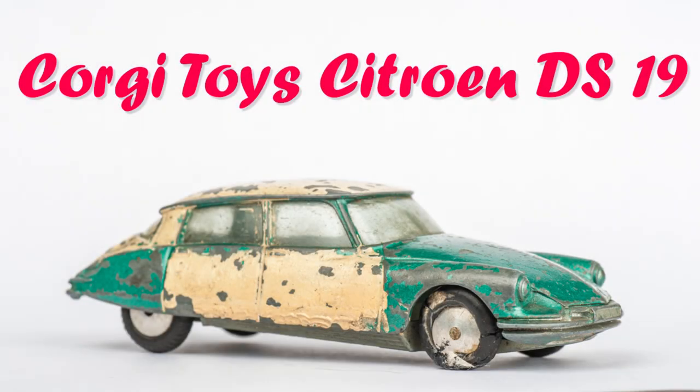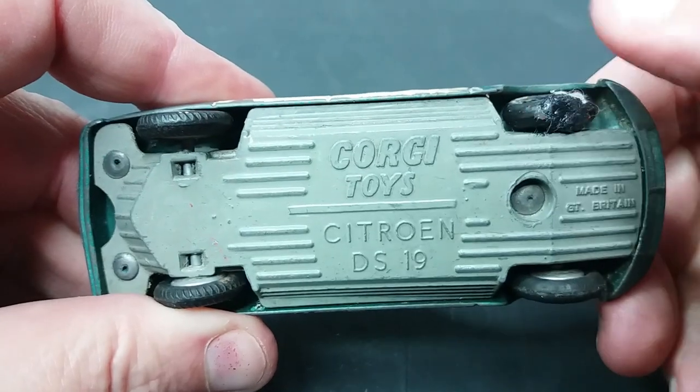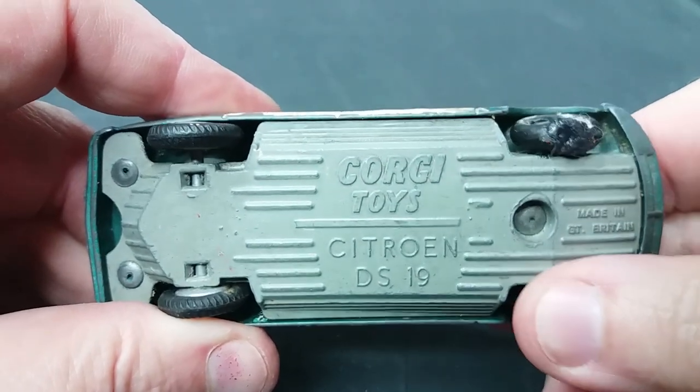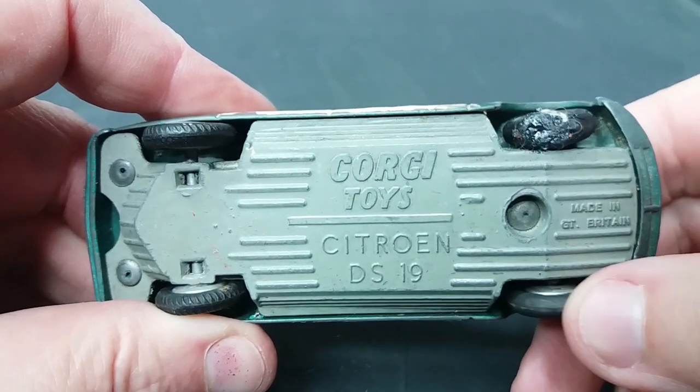Hello and welcome to another Diecast Rescue. In this video we are going to restore a Corky Toys Citroen DS19 model number 210 which was made between 1958 and 1960.